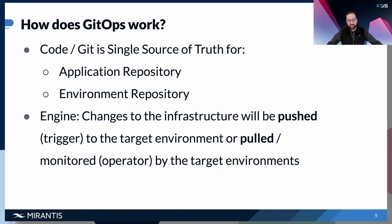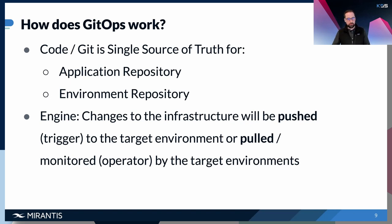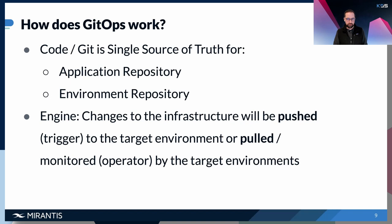In GitOps there is also an engine — tooling — which comes in two approaches: the push-based approach and the pull-based approach. With push-based, every time there are changes to your infrastructure in the environment repository, a trigger — such as a commit — causes a pipeline to apply changes to your target environment. The pull-based approach uses an operator that continuously compares the desired state and the actual state, and can also monitor your container image registry.